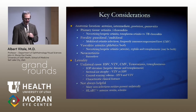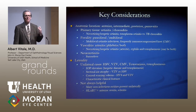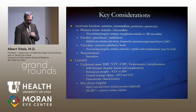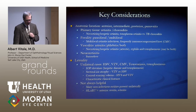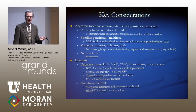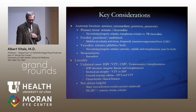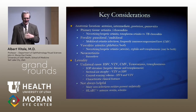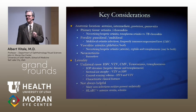Laterality is important in that many infectious uveitis present unilaterally — for example, necrotizing herpetic retinitis frequently presents unilaterally, though it may become bilateral. Toxoplasmosis is frequently unilateral. Other associated signs such as elevated intraocular pressure, stigmata of herpetic infections like sectoral iris atrophy or corneal scarring, can give clues to the diagnosis.